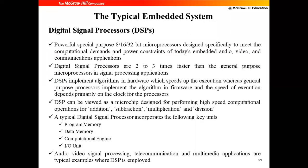Coming to one important part of the system core — DSP, Digital Signal Processors. We have microprocessors, microcontrollers, and DSP processors, which can also be used in embedded systems. DSP is a powerful, special-purpose 8-bit or 16-bit processor designed specifically to meet the computational demands and power constraints of today's embedded world. DSP processors are two to three times faster than general purpose microprocessors. This is because the algorithm is implemented in hardware on a separate board.